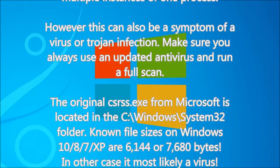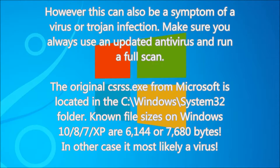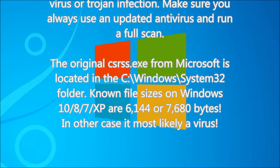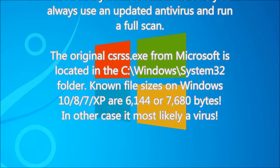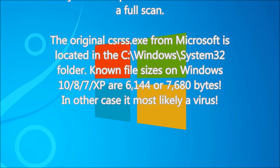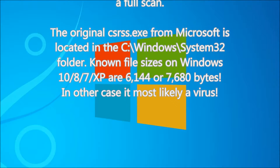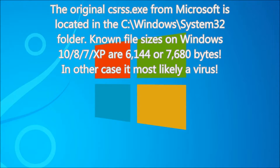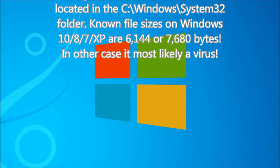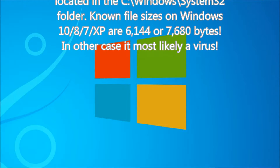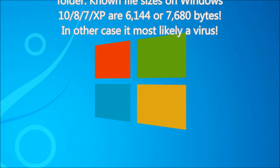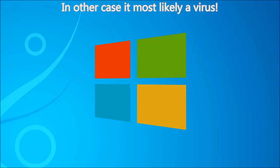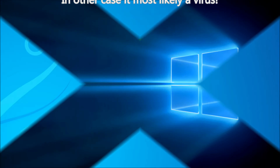The original csrss.exe from Microsoft is located in the C:\Windows\System32 folder. Known file sizes on Windows 10, 8, 7, and XP are 6,144 or 7,680 bytes. In any other case, it is most likely a virus.